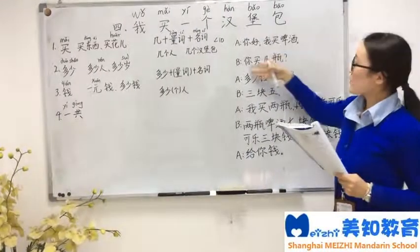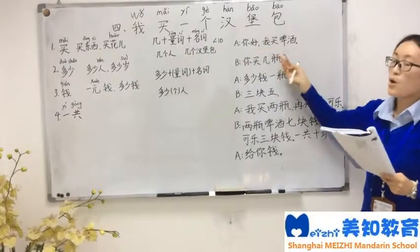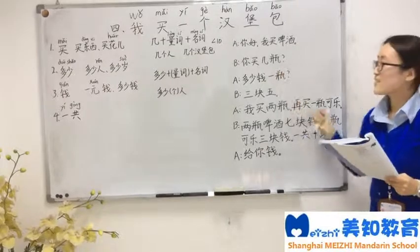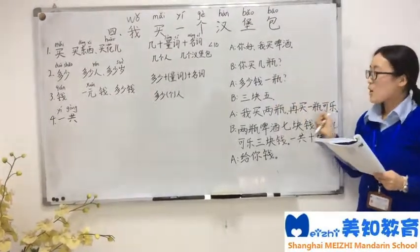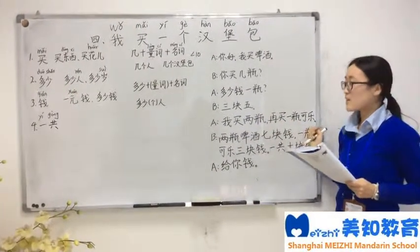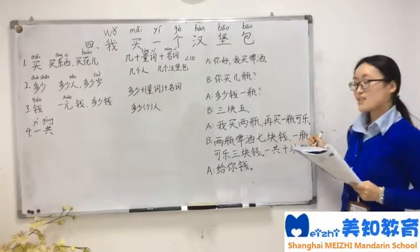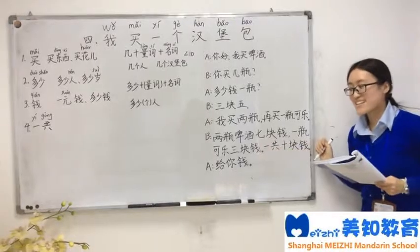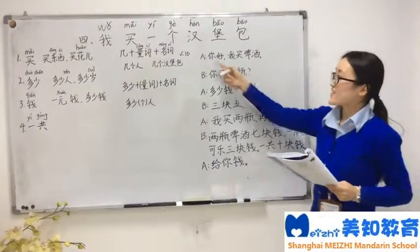Okay, next we'll look at the text. 你好，我买啤酒。你买几瓶？多少钱一瓶？三块五。我买两瓶，再买一瓶可乐。两瓶啤酒七块钱，一瓶可乐三块钱，一共十块钱。给你钱。